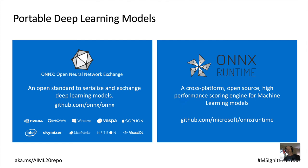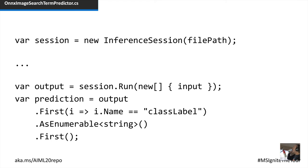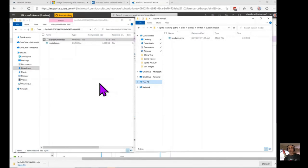Now that we've trained our custom vision model, let's integrate it into the Tailwind Traders app. We'll use the ONNX Runtime, an open-source inference engine that provides functions to generate predictions from models in the ONNX format. We create a new inference session from the ONNX file we generated, generate a classification label from the uploaded image as a string, then pass that into the existing search feature of the Tailwind Traders website. The exported model is a zip file containing a model.onnx file — a text representation of the neural network — plus a manifest file.